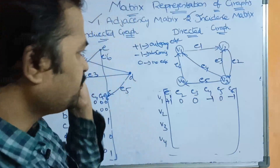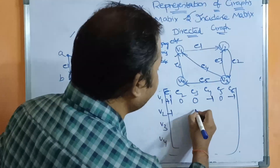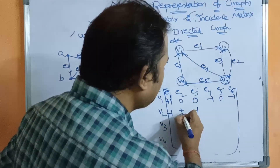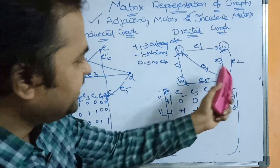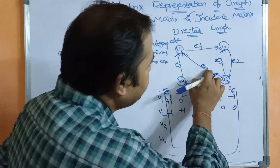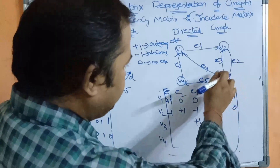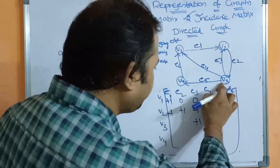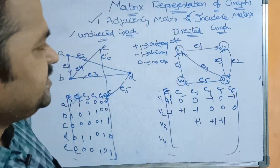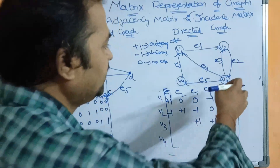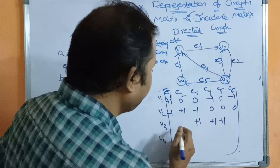For V2, E1 is an incoming edge so minus 1, E3 is an incoming edge so minus 1, and E2 is an outgoing edge so plus 1. Remaining values E4, E5, E6 are 0. For V3, E3 and E4 are outgoing edges so plus 1 each, E5 is also an outgoing edge so plus 1, and E2 is an incoming edge so minus 1. Remaining values are 0.